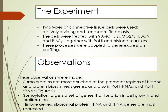Observations: SUMO proteins are more enriched at the promoter regions of histones and protein biosynthesis genes, and also in Pol1 rRNAs and Pol2 tRNAs, as shown in Figure 2. SUMO-1 targets a set of genes that function in cell growth and proliferation. Histone genes, ribosomal protein, rRNA, and tRNA genes are most repressed.